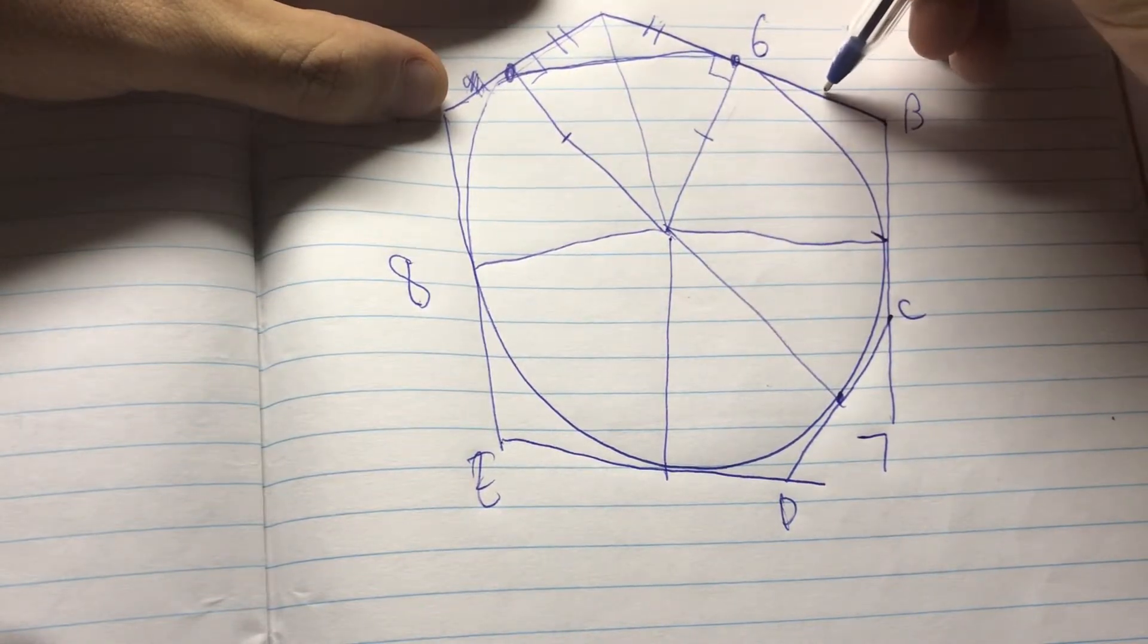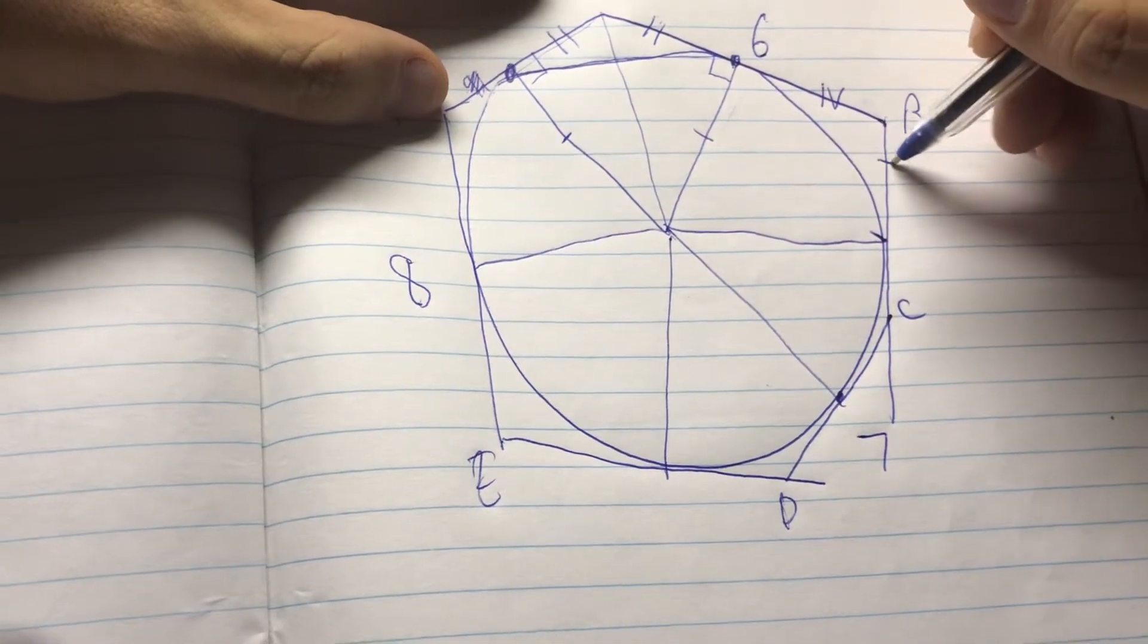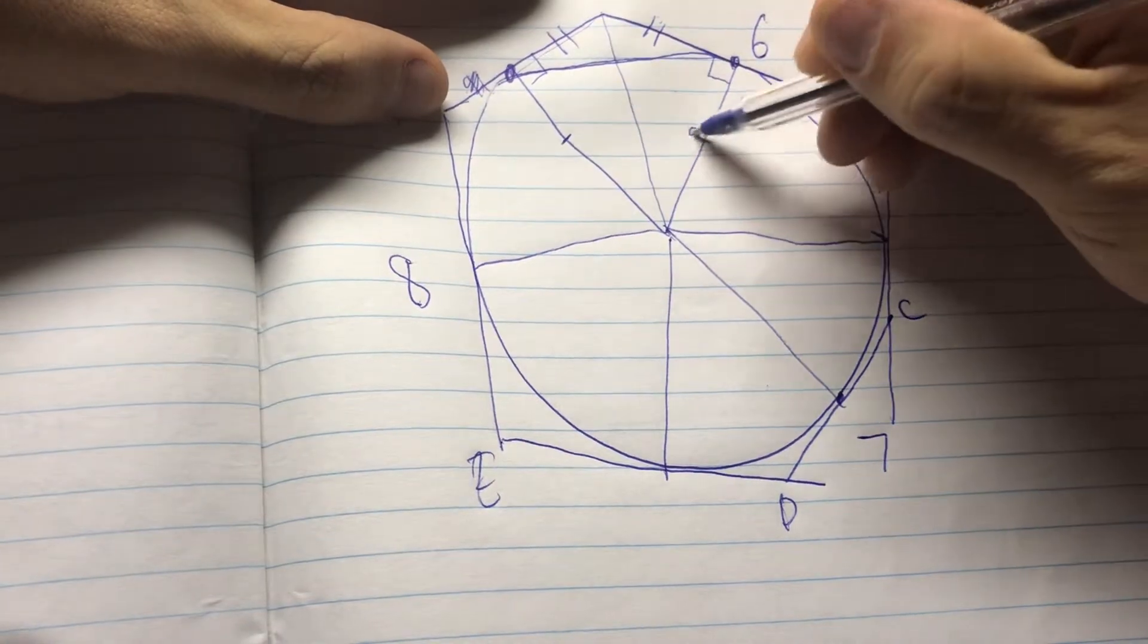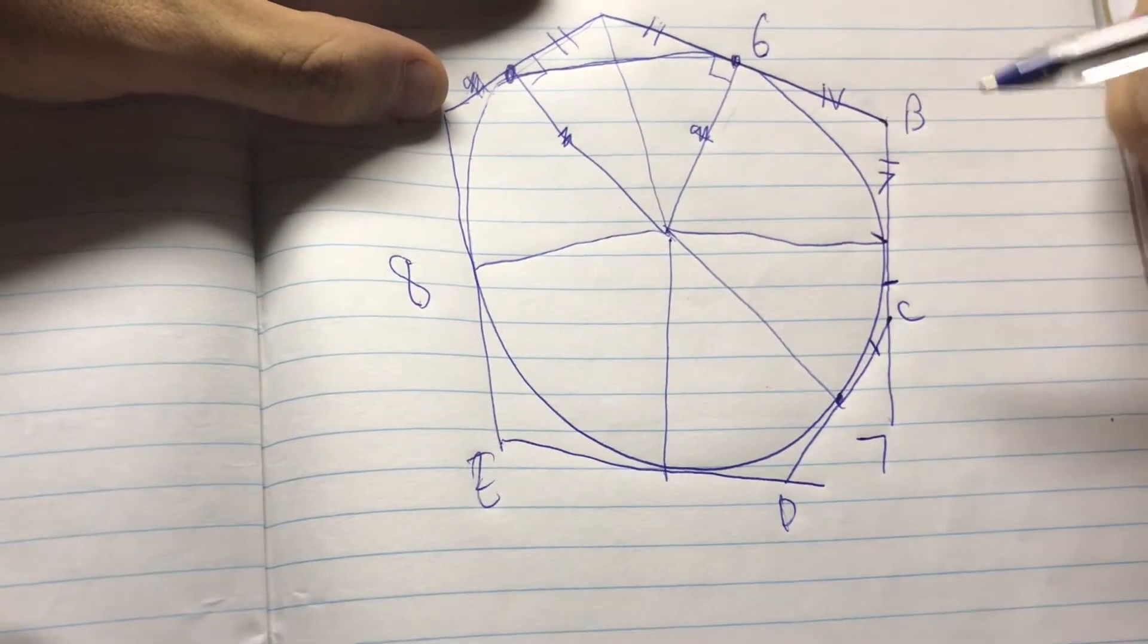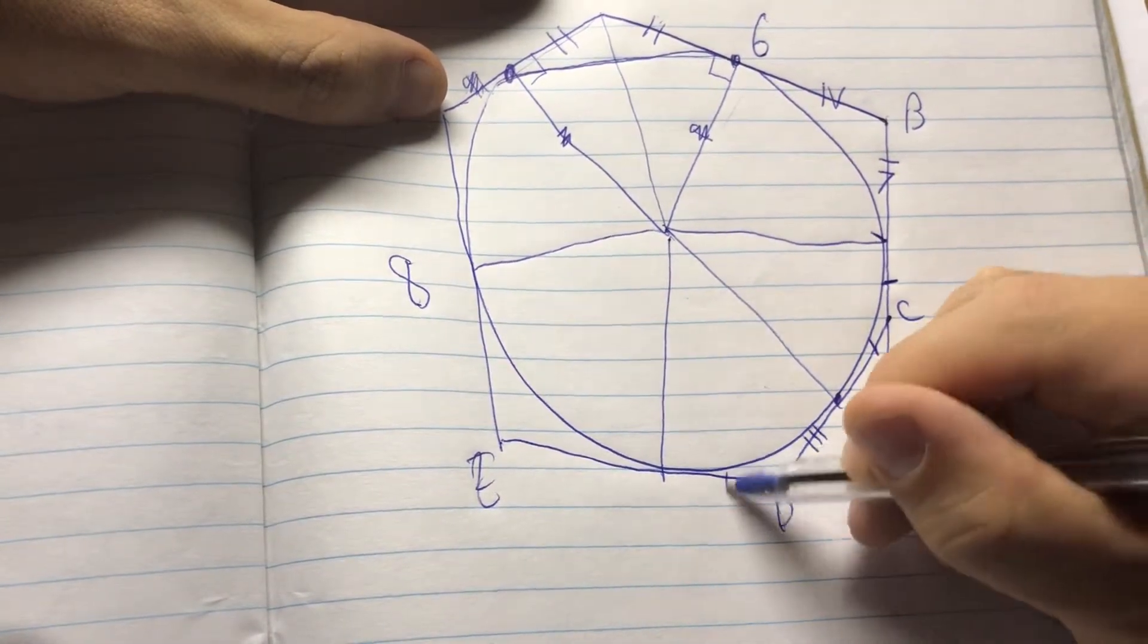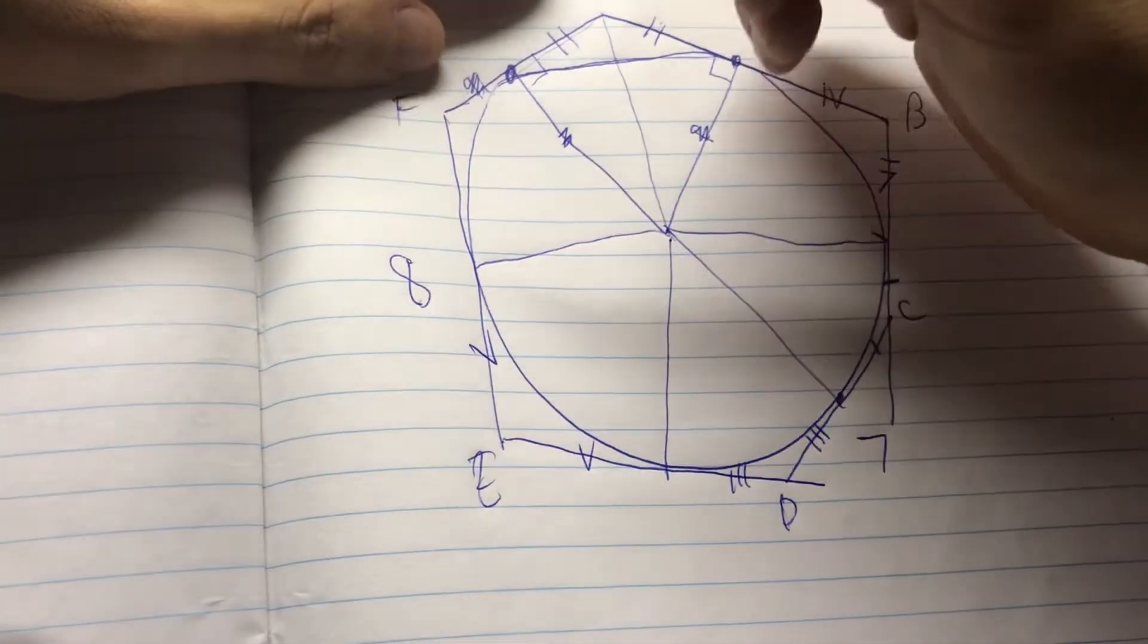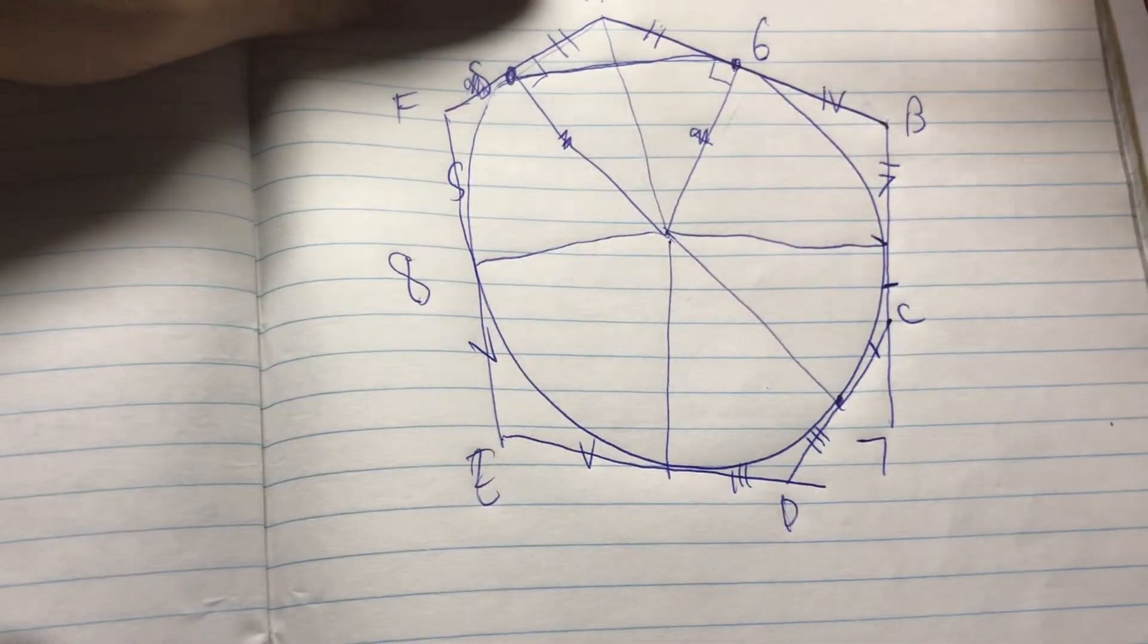Right angle hypotenuse side. Yeah. And so, then this has the same length. Just remove these markings. We have this and this have the same length. This and this have the same length. This and this have the same length. And this and this have the same length. Okay?